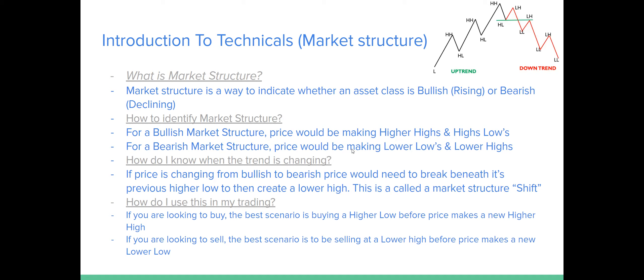For a bearish market structure, price would be making lower lows and lower highs. If price is in a downtrend and you're looking to sell, you'd identify: is it making new lows and lower highs? The market breathes in to a lower high — that's a retracement — then breathes out to a lower low, because it's underneath the previous low. Then price breathes in again for the retracement at a lower high, and then breathes out again to a new lower low.